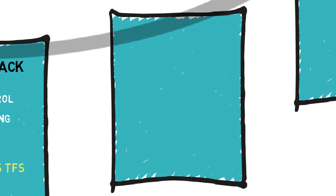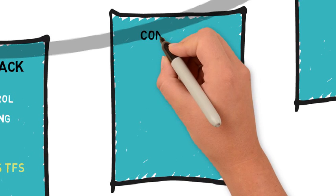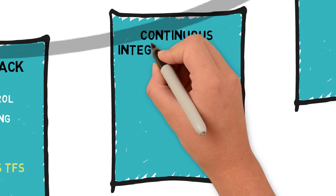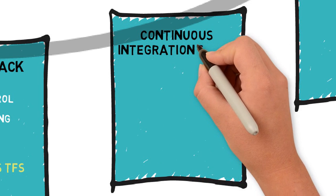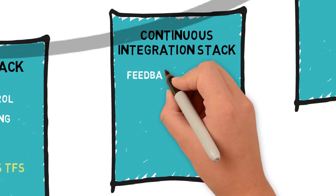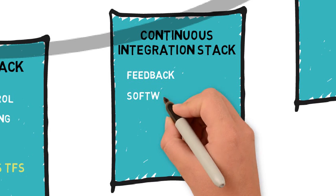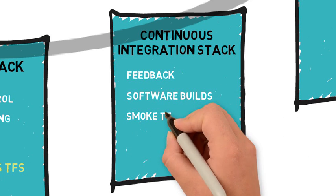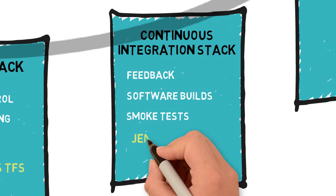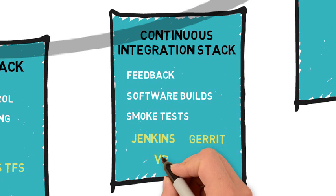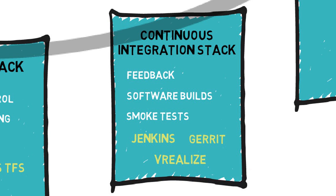Developers need fast, useful feedback once code is committed. Continuous integration tools support automated software builds and automated smoke tests. The continuous integration stack uses tools like Jenkins, Garrett Triggers, and vRealize Automation.